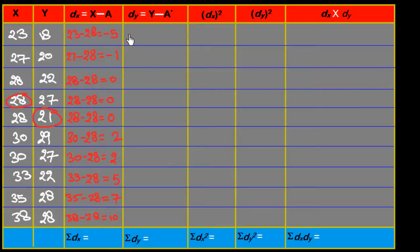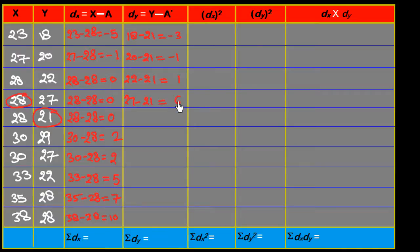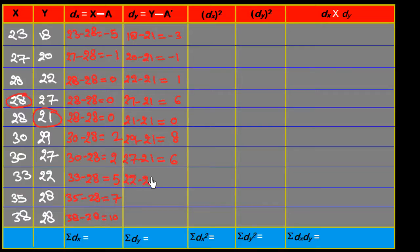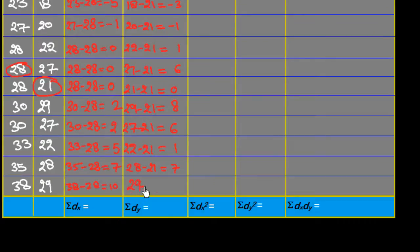Computing dx: 23 minus 28 equals minus 5; 27 minus 28 equals minus 1; 28 minus 28 equals 0; 28 minus 28 equals 0; 28 minus 28 equals 0; 30 minus 28 equals plus 2; 30 minus 28 equals plus 2; 33 minus 28 equals 5; 35 minus 28 equals 7; 38 minus 28 equals 10. Computing dy: 18 minus 21 equals minus 3; 18 minus 21 equals minus 3; 20 minus 21 equals minus 1; 22 minus 21 equals 1; 27 minus 21 equals 6; 21 minus 21 equals 0; 29 minus 21 equals 8; 27 minus 21 equals 6; 22 minus 21 equals 1; 28 minus 21 equals 7; 29 minus 21 equals 8.